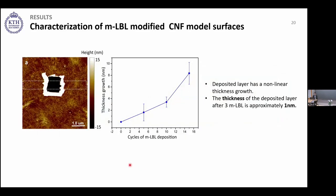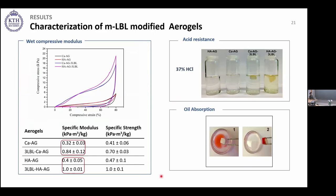We then performed a scratch test: the black square is the scratched area, and the white region around it shows displaced CNFs. We measured the thickness of the deposited layer and found that after 3 MLBL depositions it is approximately 1 nm — extremely thin. Since we had 3 MLBL layers on the aerogel, the thickness on the aerogel should be in the same range. Although the deposited layer was very thin, it had a significant effect on wet mechanical properties, improving them almost 2.5 times.